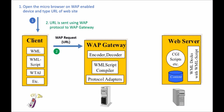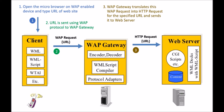Step two: the URL is sent using WAP protocol to the WAP gateway. A WAP request is sent from the client to the WAP gateway containing the URL you typed. Step three: the WAP gateway translates this WAP request into an HTTP request for the specified URL and sends it to the web server. The web server may then fetch a static file or CGI output in WML if required.